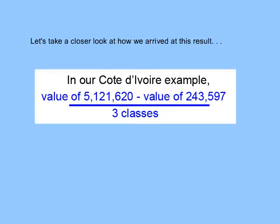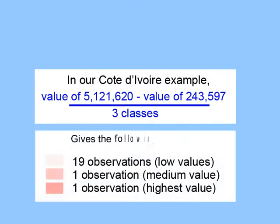Let's take a closer look at how we arrived at this result. Using our Cote d'Ivoire data, we have a range of approximately 200,000 as our low value and approximately 5 million as our high value. If we subtract the low value from the high value and then divide this range by three classes, we get three equal ranges — 19 observations fall into our lowest range, one into the medium, and one into the highest.